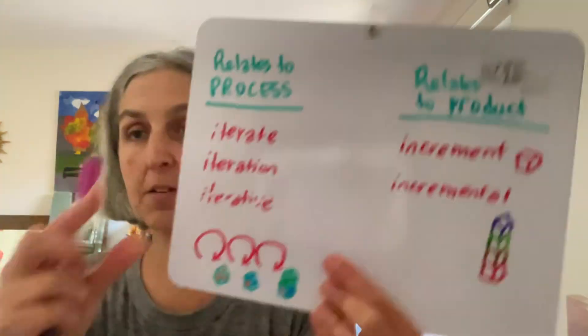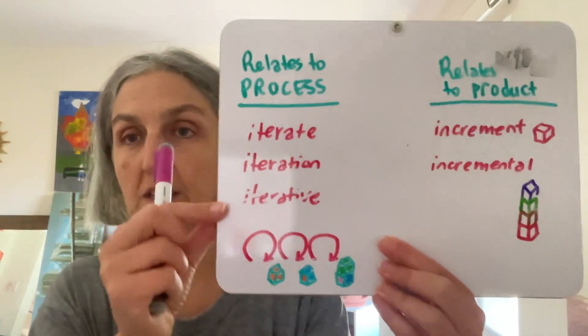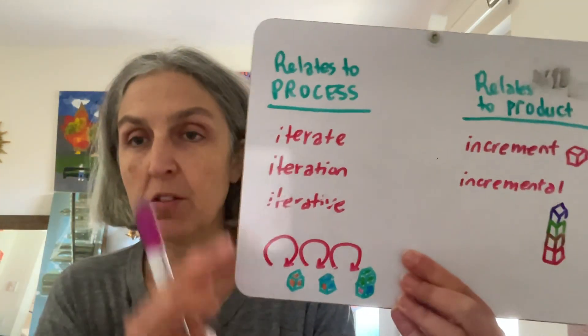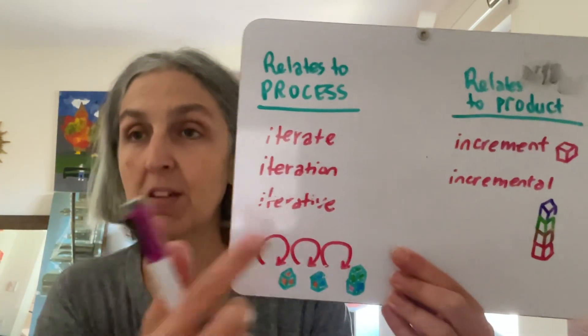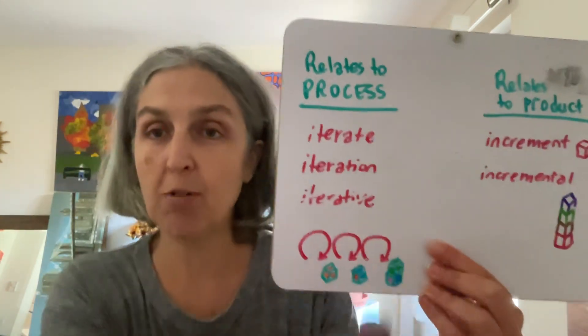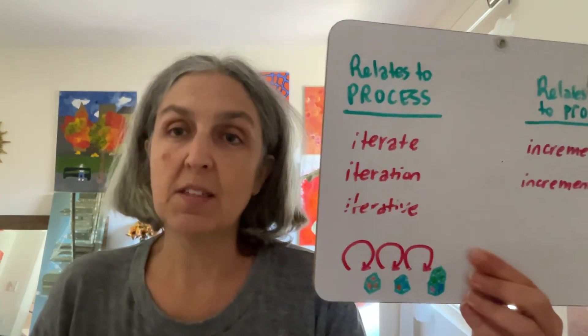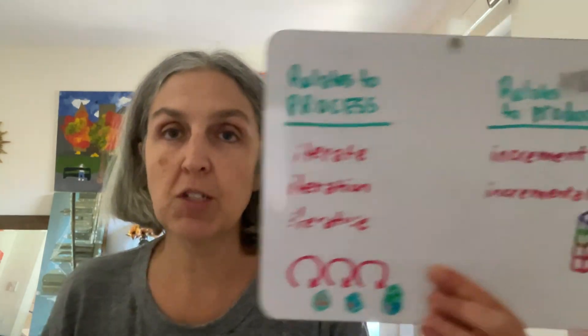There's a one-time delivery with iterative. So open your book and you can see this there. Those are words that relate to the process — iterate, iteration, and iterative — all words that relate to the processes we see in the developmental approaches.